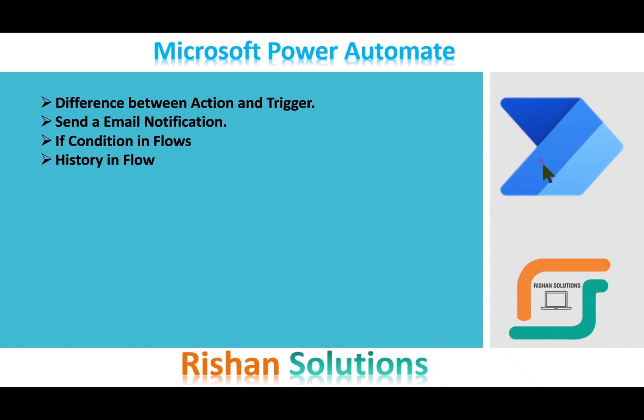Welcome to Microsoft Power Automate training videos. In this video we'll discuss the difference between action and trigger, and we'll use Send an Email Notification to the end user — for example, when an item is created. We'll see how to send email notifications, how to use an if-condition in the flow, and we'll check the history in the flow.